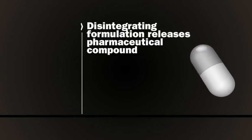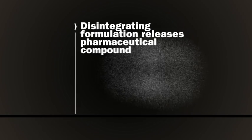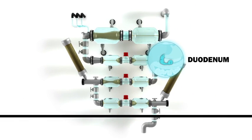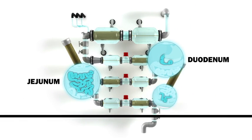After administration the formulation stays in the stomach, disintegrates and starts to release the pharmaceutical compound. The small intestine in the TIM 1 consists of three separate compartments: the duodenum, the jejunum and the ileum.